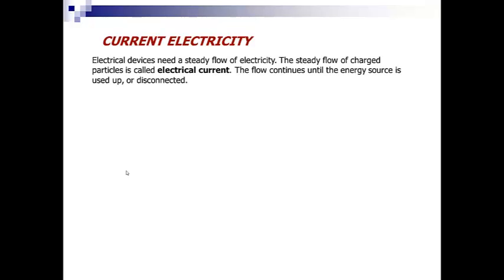Electrical devices need a steady flow of electricity. The steady flow of charged particles is called electrical current. A flow continues until the energy source is used up or disconnected.